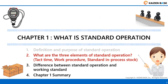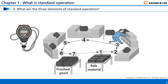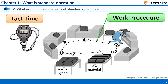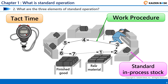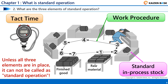Next, we will explain what the three elements of Standard Operation are. The three elements are Takt Time, Work Procedure, and Standard In-Process Stock. Unless all three elements are in place, even though a Work Procedure exists, it cannot be called Standard Operation. Let's check the outline of each element.